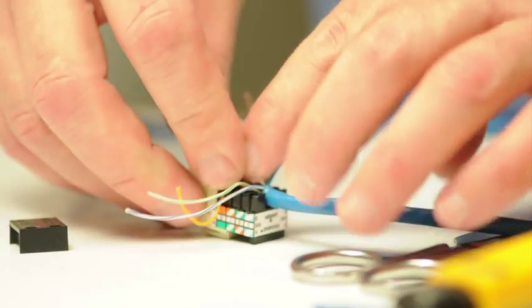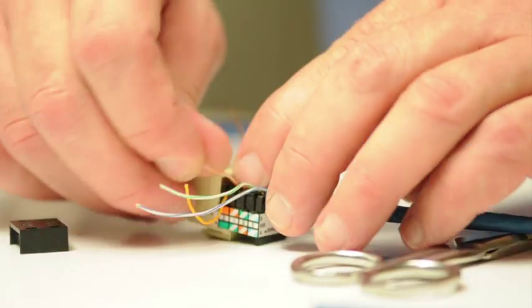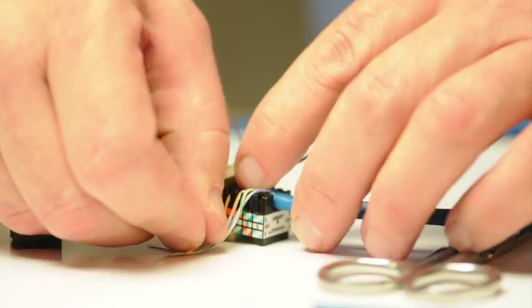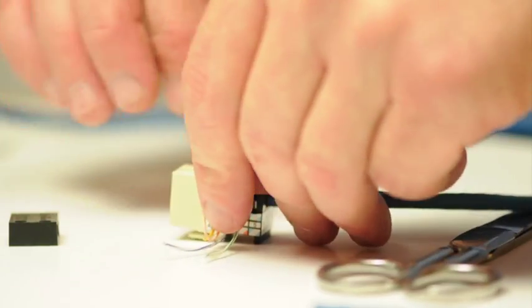Match the color code on the conductors to the color code printed on the jack. The color code shows the order of conductors.